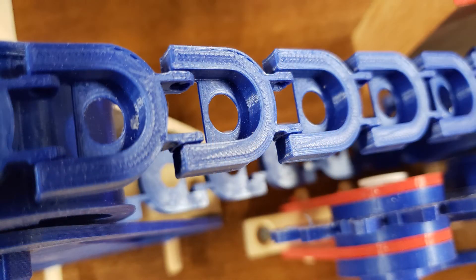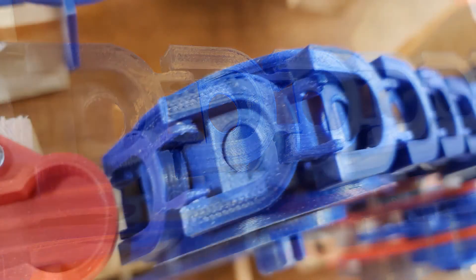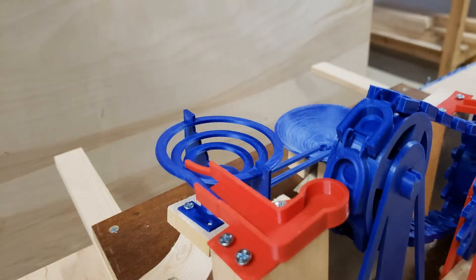The belt is made of identical links that are all clipped together and they hold the ball. The ball drops into that little hole you can see there and then it holds it pretty securely.